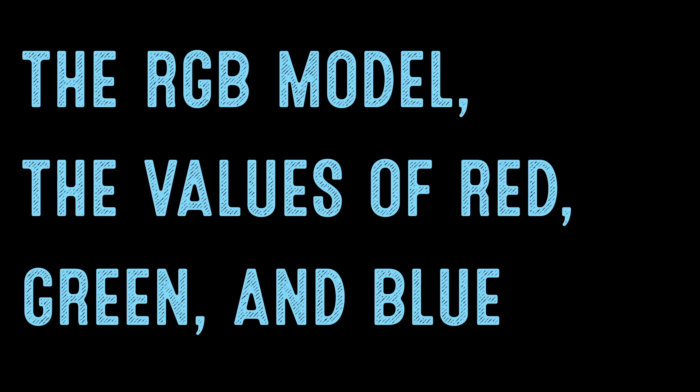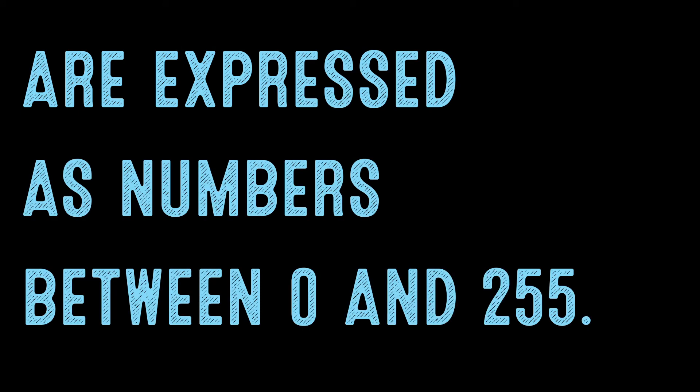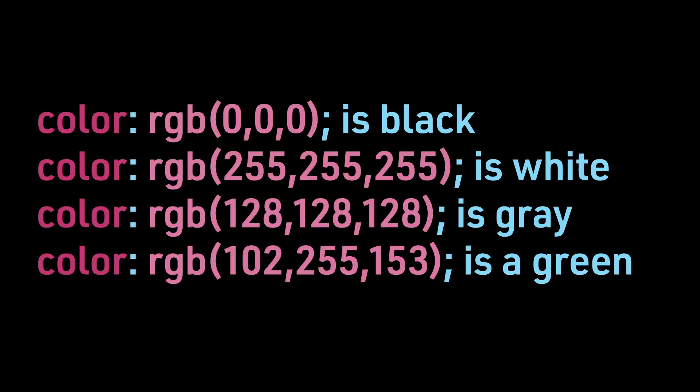In practice with the RGB model, the values of red, green, and blue are expressed as numbers between 0 and 255. So RGB(0,0,0) is black, RGB(255,255,255) is white, RGB(128,128,128) is a gray, and RGB(102,255,153) is a green.